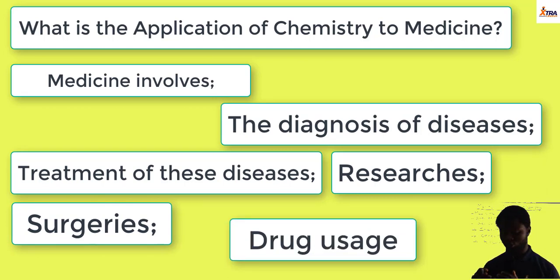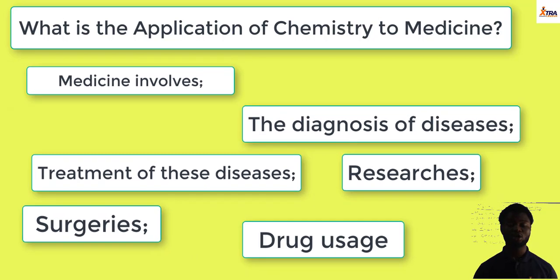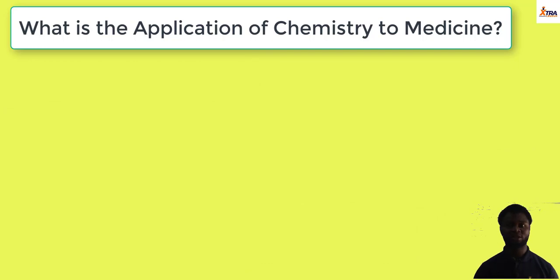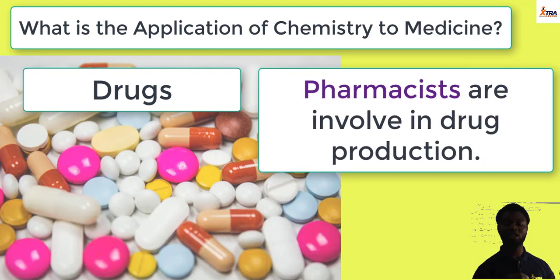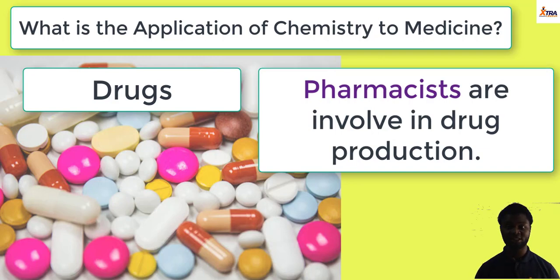Now, everybody listening to this lecture at some point in your life is dependent on drugs to cure one ailment or the other. The production of drugs is a complex chemical process given a branch called pharmacy because pharmacists are the ones involved in drug production. They mix chemicals in pure forms to produce drugs which we consume to treat or cure our diseases.